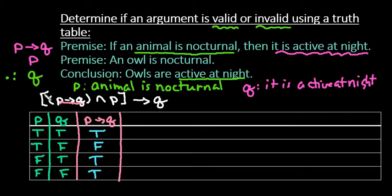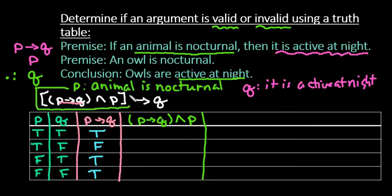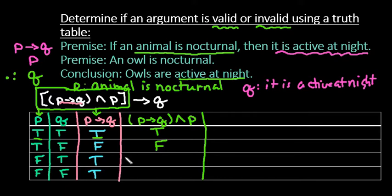Now we're going to go to our next group: if P then Q, and P is also true. In order for an AND statement to be true, the two columns that we are looking at must both be true. So we're looking at this column — P then Q — and P together. True with true is going to be true because they're both true. False with true — since they're not both true — we put false. False and true is false. True and false is also false.